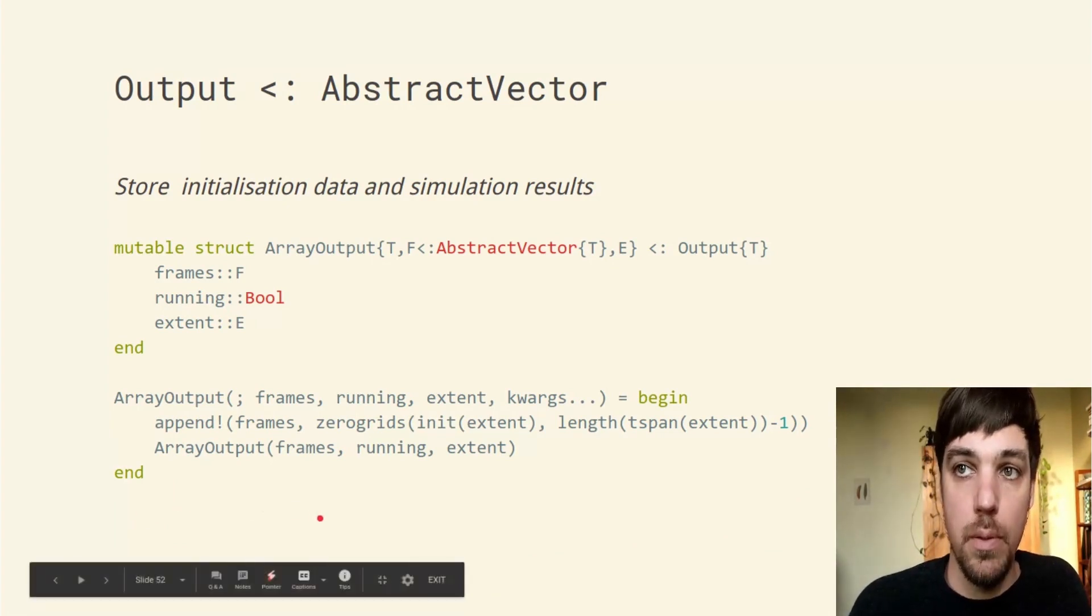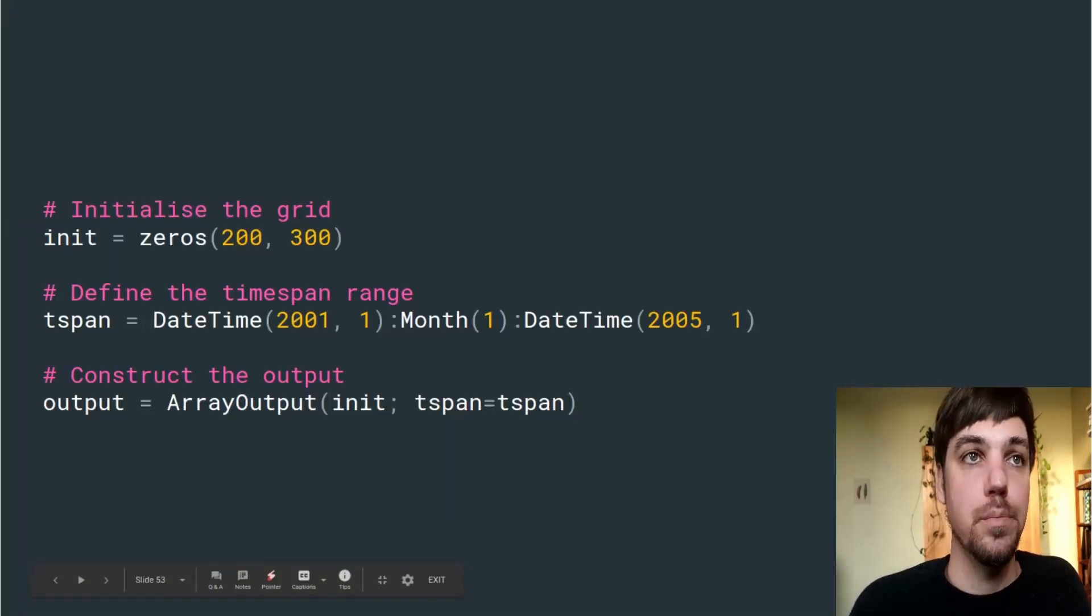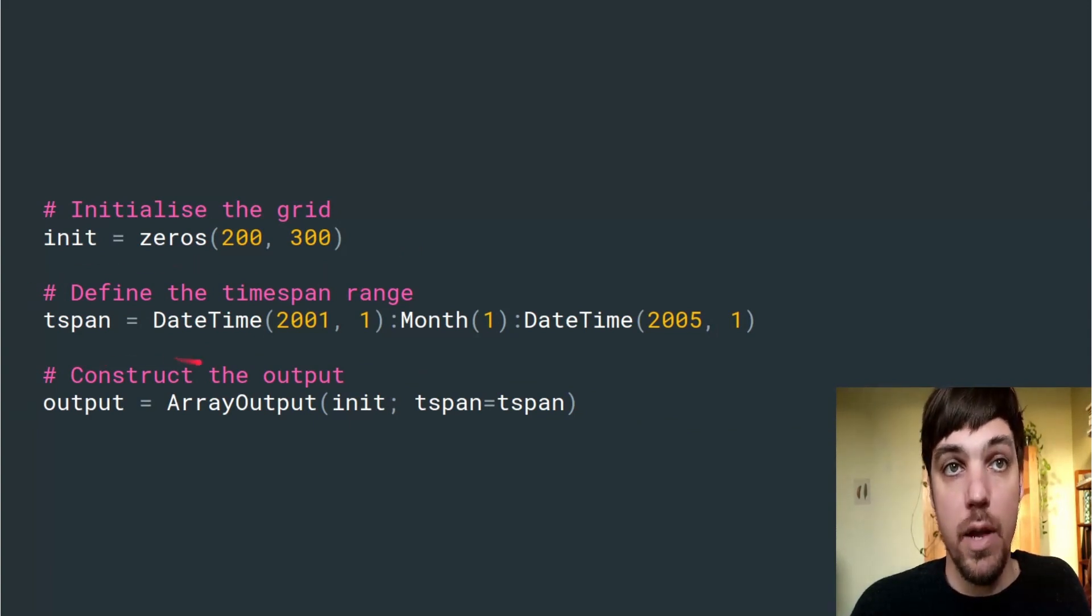This means you can define your own output types quite simply and just override the methods that you need to. We often do this for running simulations if we need better performance. We can define one of these in a script by defining the initialization grid, then defining a time span range using Julia datetime objects, but you could use unitful or just straight numbers. Then we can define the output.